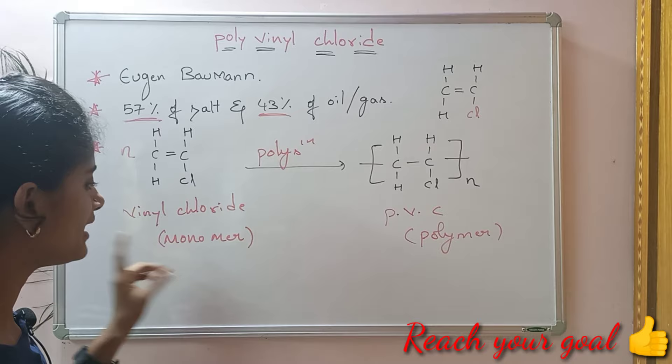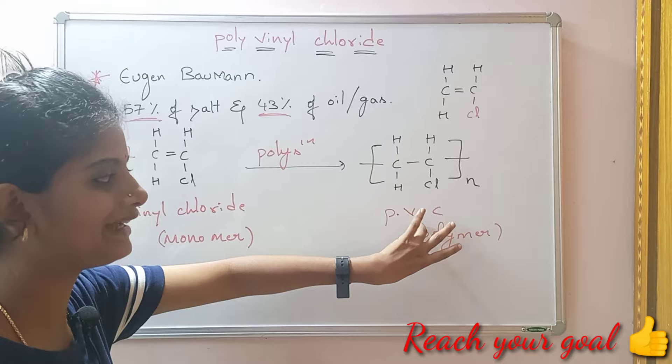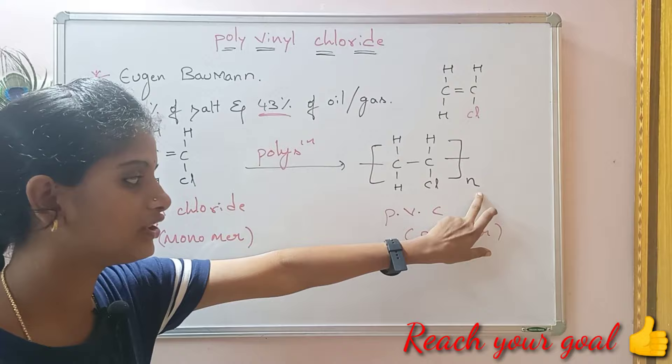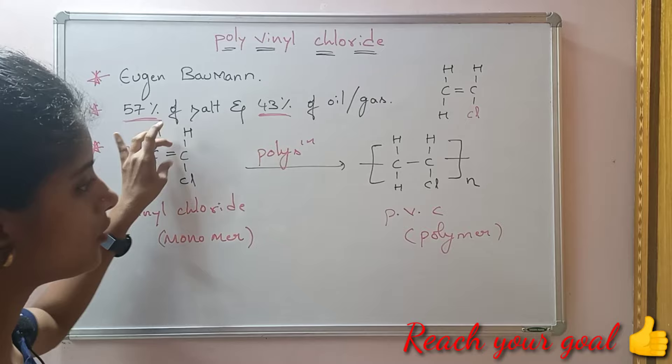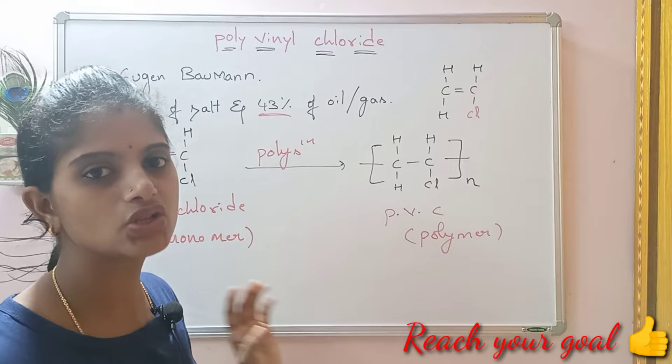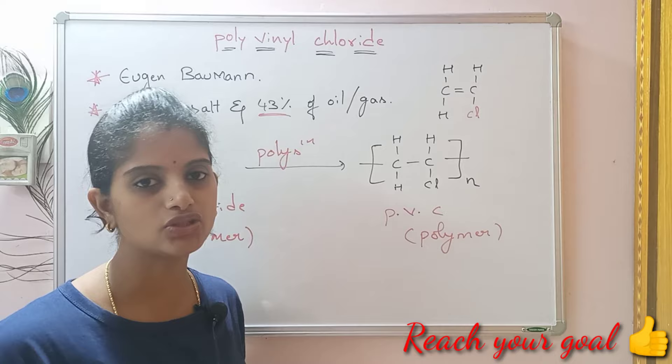This is called monomer. Monomer means one. Here we have the polymer — polyvinyl chloride — with n repeating units, so many times. Poly means many. When the double bond breaks during polymerization, a single bond is formed. Similarly, if a triple bond undergoes polymerization, a double bond is formed.